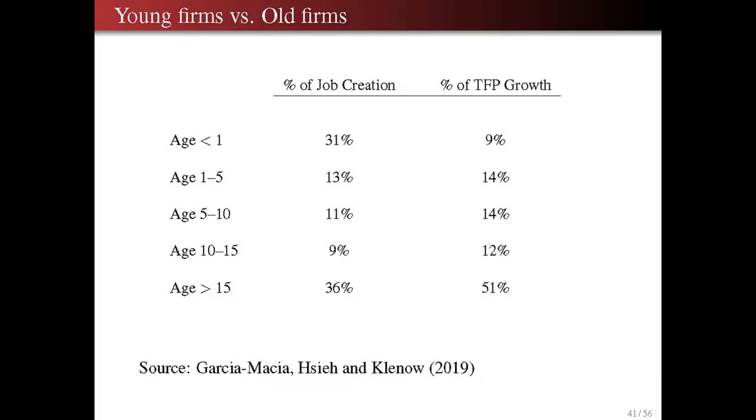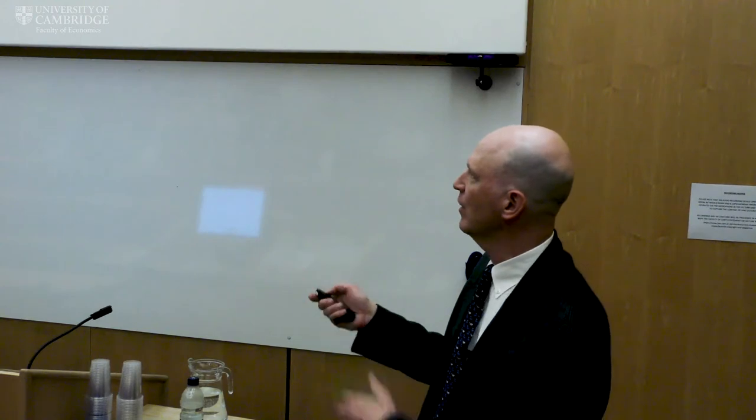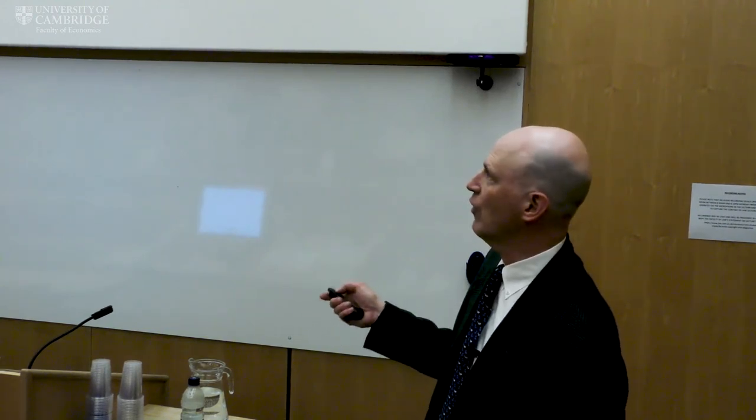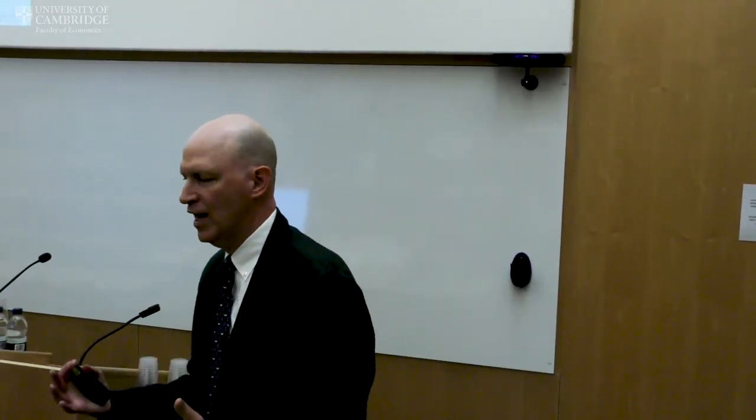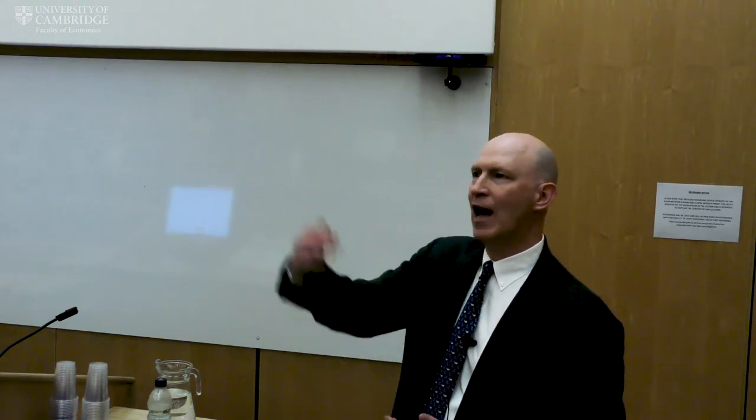We can also break it down by age. Firms over 15 years old account for 36% of job creation but half of TFP growth. An important caveat: Apple was an incumbent when it introduced the iPhone, but it was founded in the 1970s — not 1,000 years old. So it might be important that Apple was a newish firm. It might not literally be about zero-to-five-year-olds, but something in a firm's DNA that makes it hard to innovate after it gets too old — some inflexibility in firm operations.